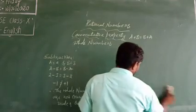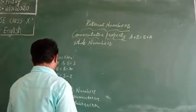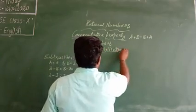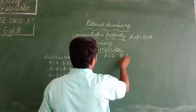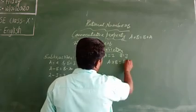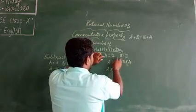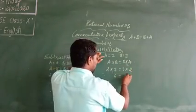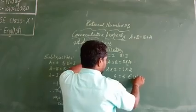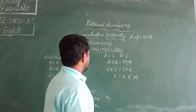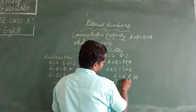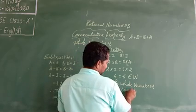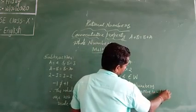Now I will check the multiplication operation. Taking the same numbers, A equals 2 and B equals 3, we check A into B equals B into A. Substituting: 2 into 3 equals 6, and 3 into 2 equals 6. Both results are 6, which belong to the set of whole numbers. Therefore, the whole numbers are commutative under multiplication.